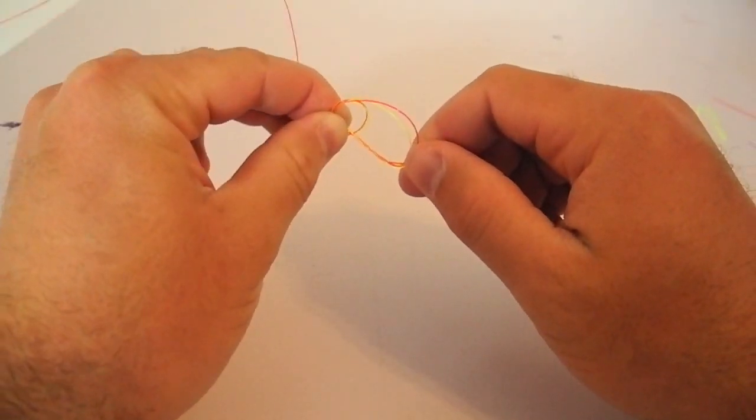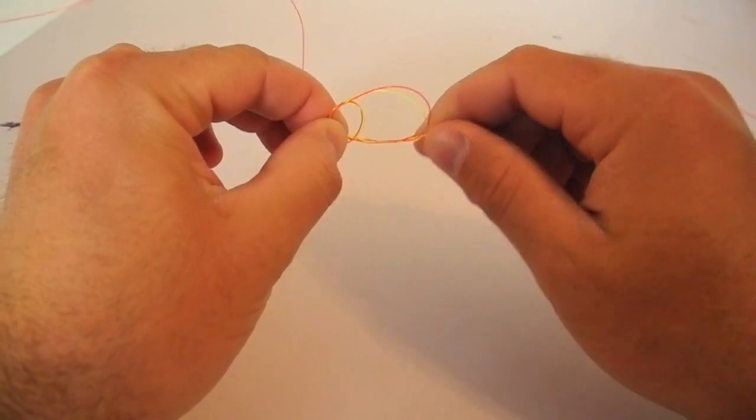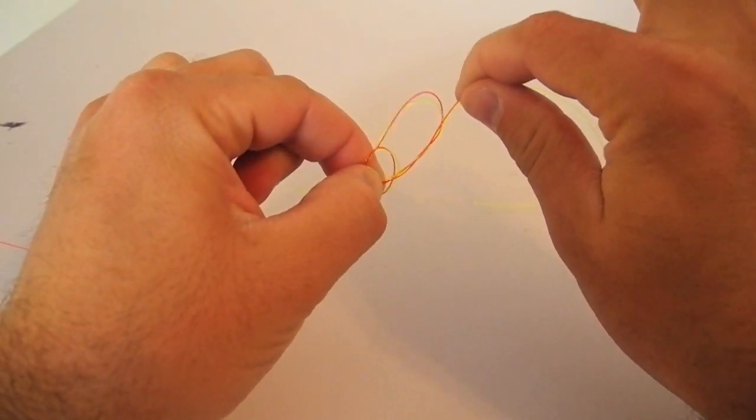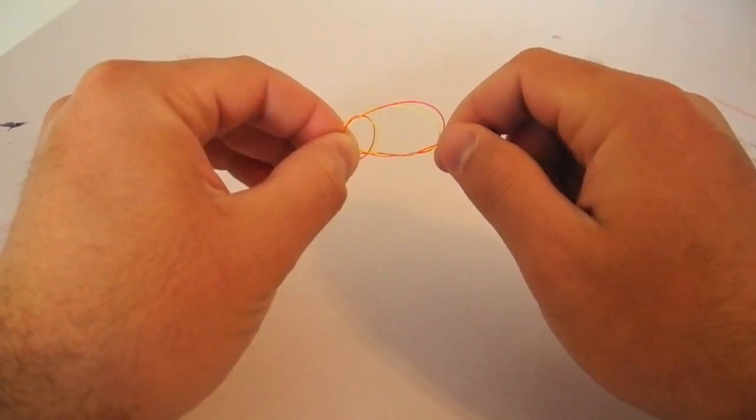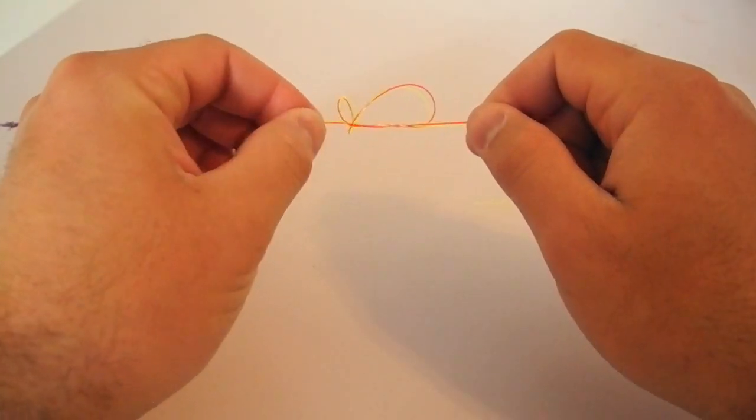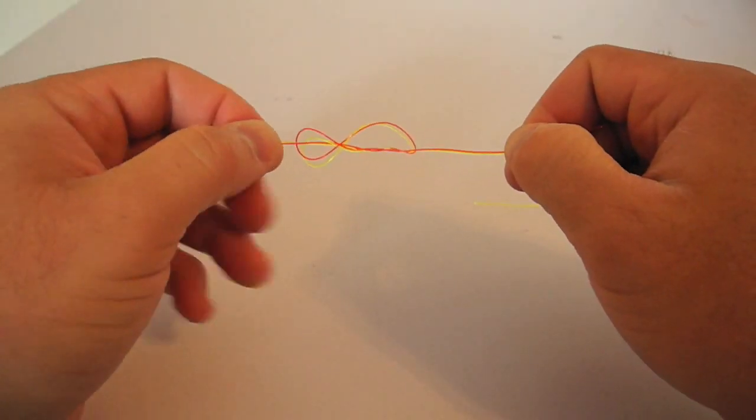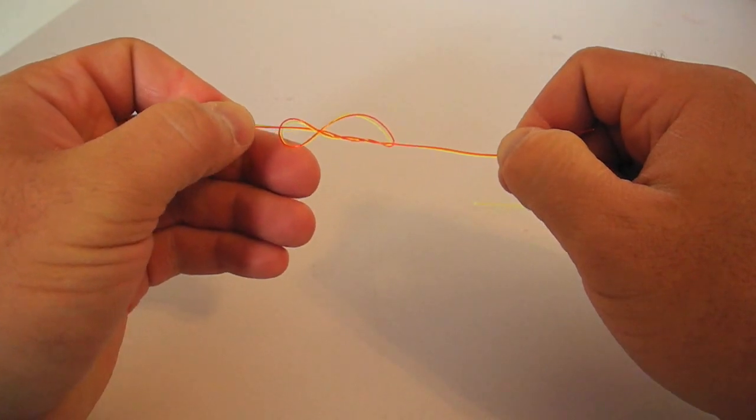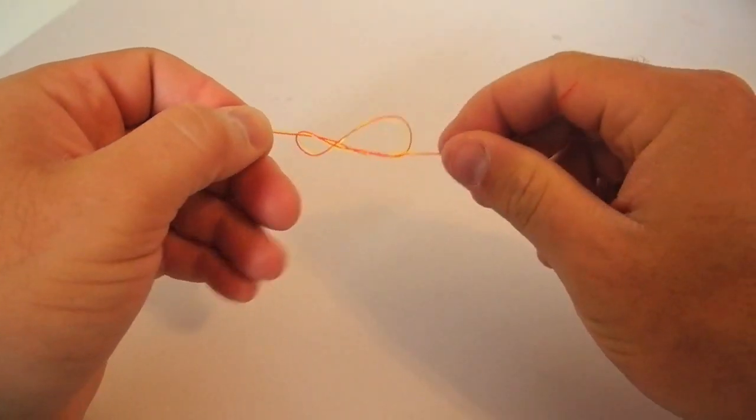Now while I'm holding the leader and the tag end of the tippet back there and the tag end of the leader and the tippet right here, I'm going to let go of the loops and I'm going to pull them to snug it down. So what you see there is I kind of have a figure eight and you know you did it right when you have that figure eight.